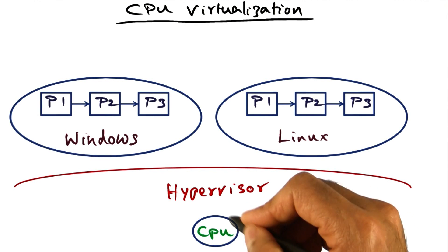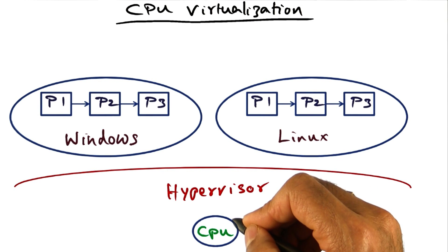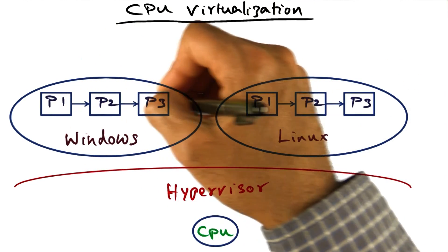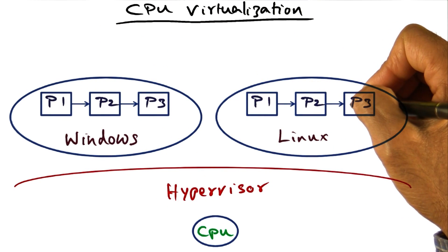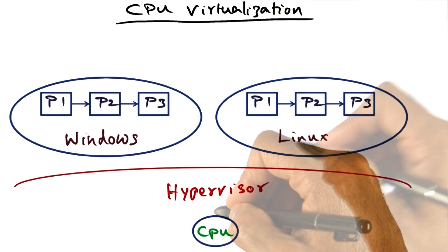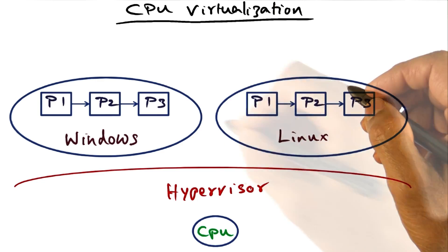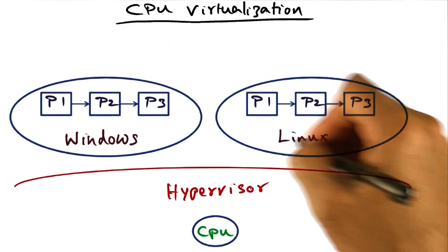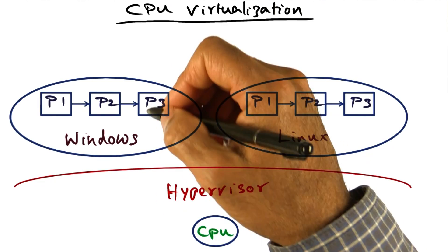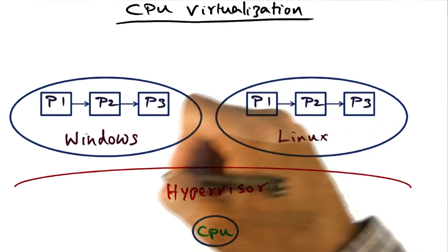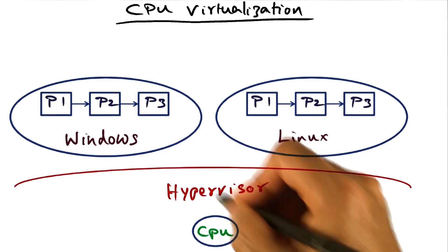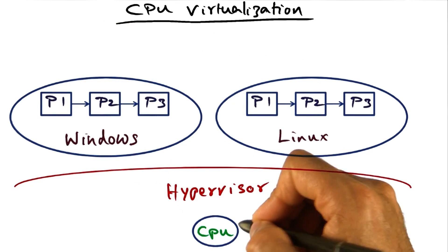To keep things simple, let's assume that there is a single CPU. Each guest operating system is already multiplexing the processes that it is currently hosting on the CPU in a non-virtualized setting also. So each operating system has a ready queue of processes that can be scheduled on the CPU. But there is this hypervisor that is sitting in between a guest operating system, its ready queue, and the CPU.